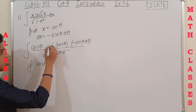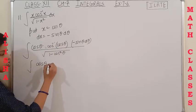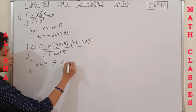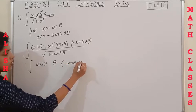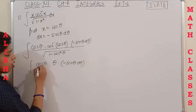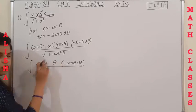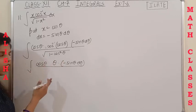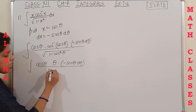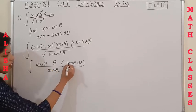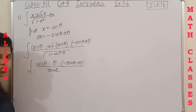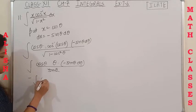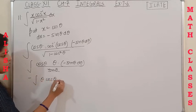The cosθ and cos⁻¹ cancel, leaving only θ · (−sinθ dθ) / sinθ. Since 1−cos²θ = sin²θ, its square root is sinθ. The sinθ cancels, giving a very simple integral: −∫θ dθ. This is a type you have done many times before.